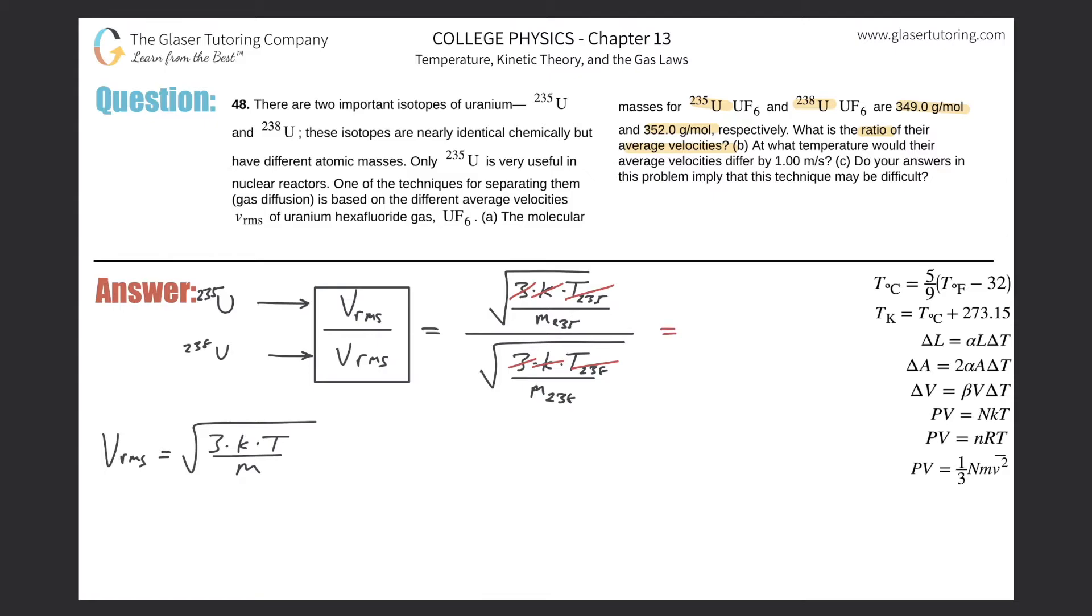So now if I rework this ratio, we should have the square root of M238 in the numerator divided by the square root of M235. Basically, since this is in the denominator of the numerator, it's in the denominator of the overall fraction. And since this is in the denominator of the denominator, it's actually in the numerator of the overall fraction. So now what we need to do is our conversions.